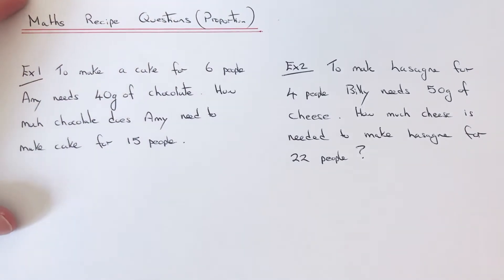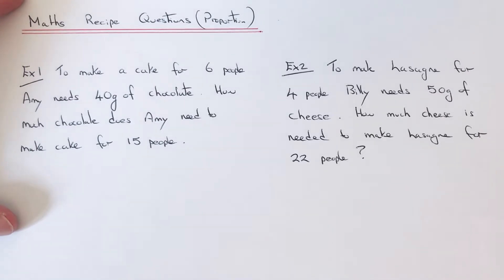Hi guys, welcome back. Today I'm going to look at some maths recipe questions. So let's have a look at our first example. To make a cake for 6 people, Amy needs 40 grams of chocolate. How much chocolate does Amy need to make a cake for 15 people?